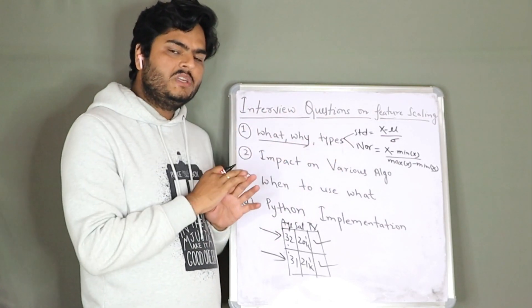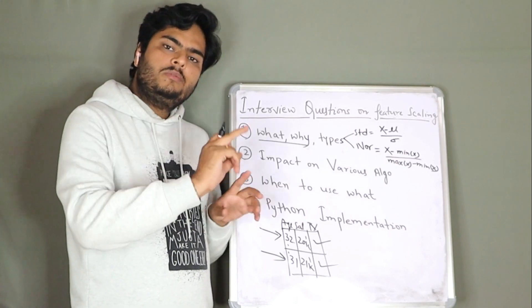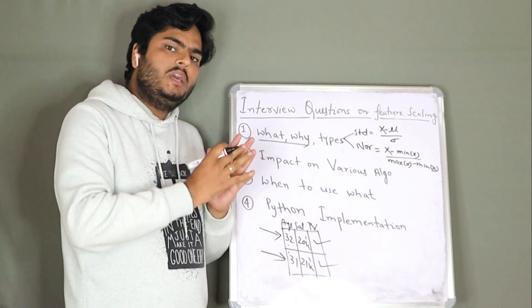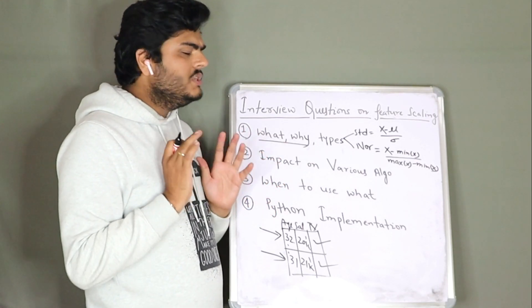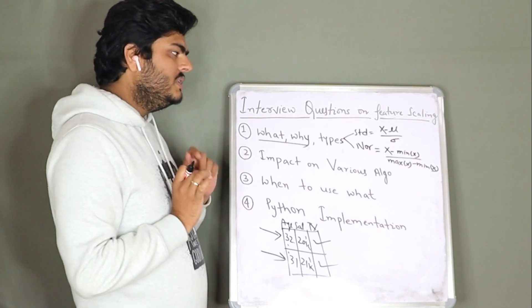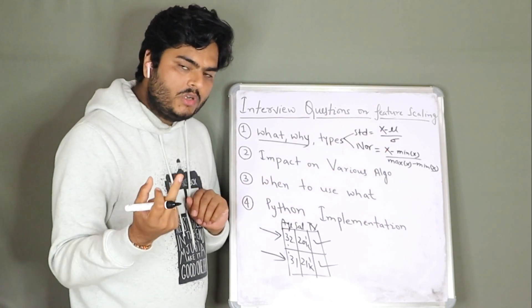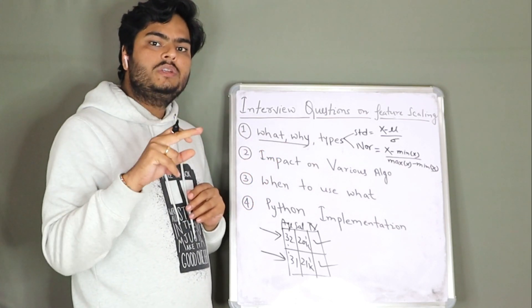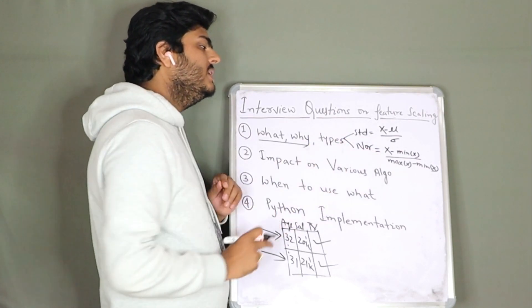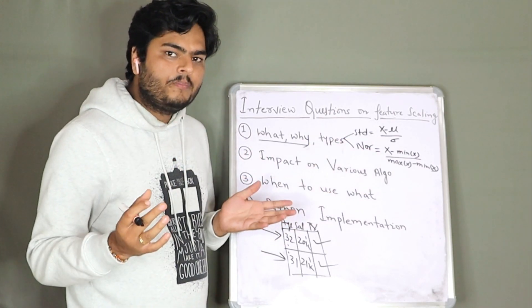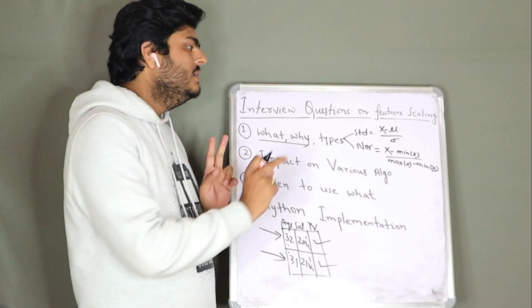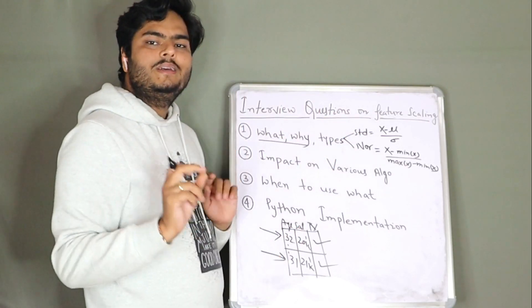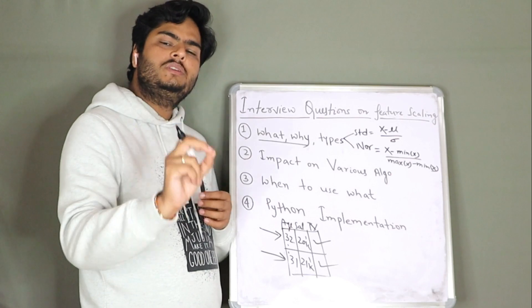And in place of minimum of x, if you put mu here or mean here, that is called mean normalization. But mostly, keep it very simple. Remember, standardization and normalization. In standardization, x minus mu by sigma. In normalization, x minus minimum of whole observation and denominator will be max of x minus min of x, the range of that column, basically. How these two formulas are different? In first one, you will get numbers which is in normal distribution with mean 0 and standard deviation of 1. In second one, you will get numbers between 0 to 1.